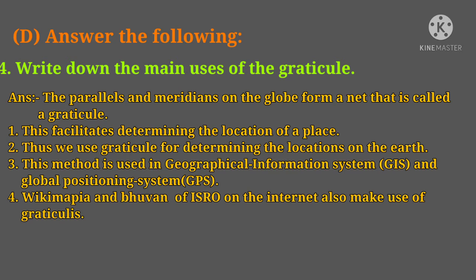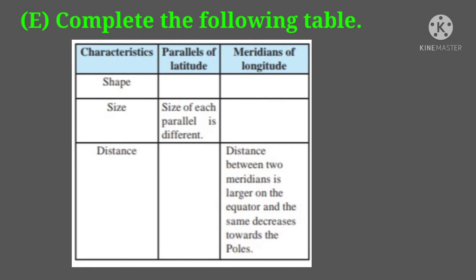Wikimapia and Bhuvan of ISRO on the internet also make use of graticules. Question E: complete the following table. Characteristics are given for parallels of latitudes and meridians of longitudes. First characteristic — shape: the shape of parallels of latitude is circular, while the shape of meridians of longitude is semicircular.